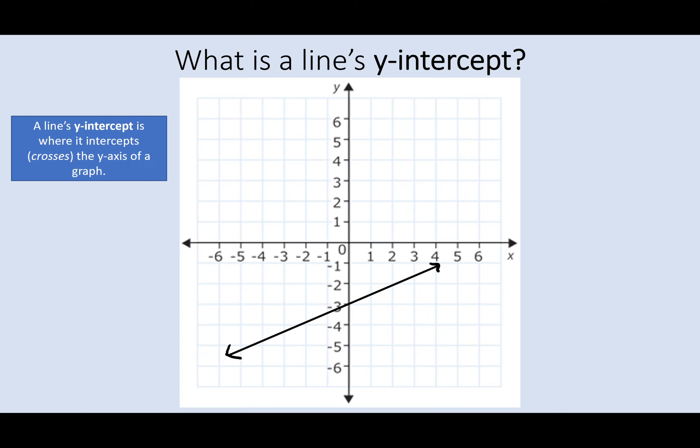Let's go ahead and let's move on to another line. So let's say we have this line right here. Well we can see that this line is crossing the y-intercept at the point of negative 3. So the y-intercept of this line is negative 3.